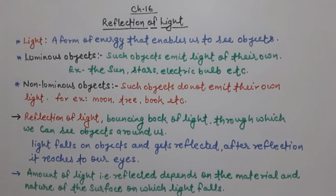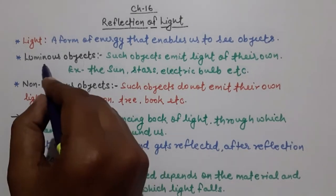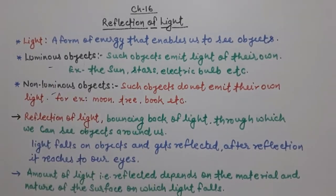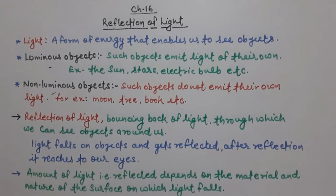There are two types of objects. Luminous objects emit light of their own — like the sun, stars, electric bulb, etc. Non-luminous objects do not emit their own light; they depend on other sources of light. For example, the moon, tree, book, etc.